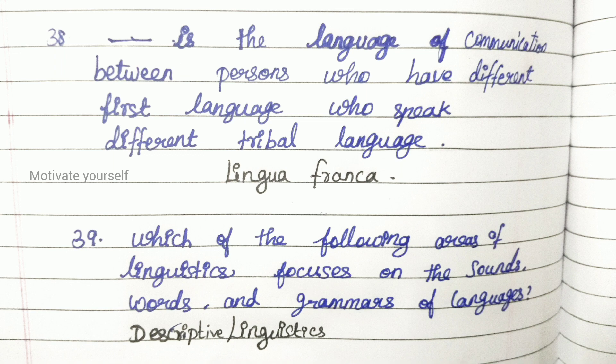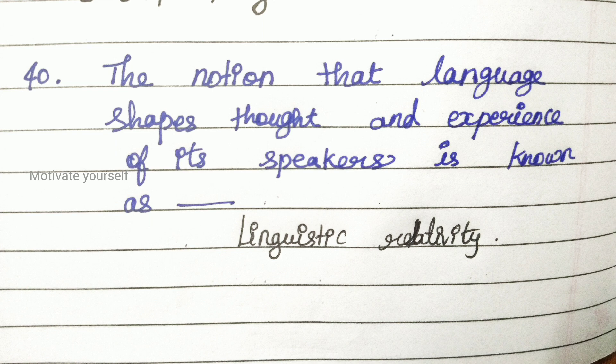Thirty-eight: lingua franca is the language of communication between persons who have different first languages or speak different tribal languages. Thirty-nine: descriptive linguistics focuses on the sounds, words, and grammars of languages. Forty: the notion that language shapes the thought and experience of its speakers is known as linguistic relativity.